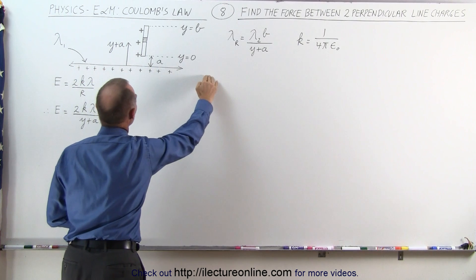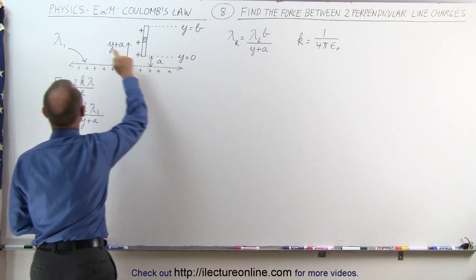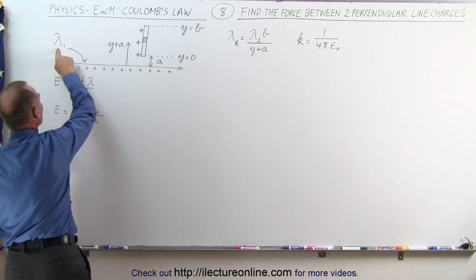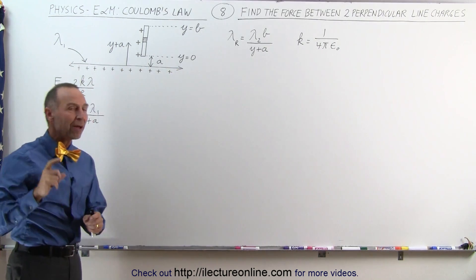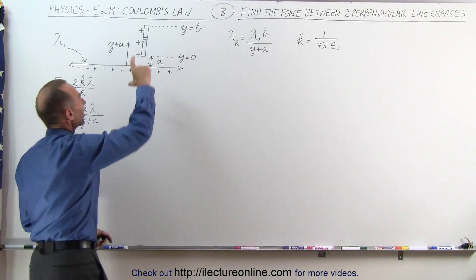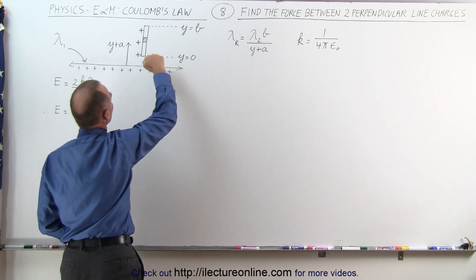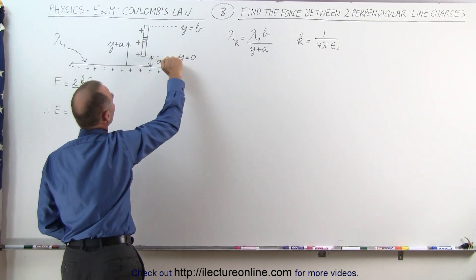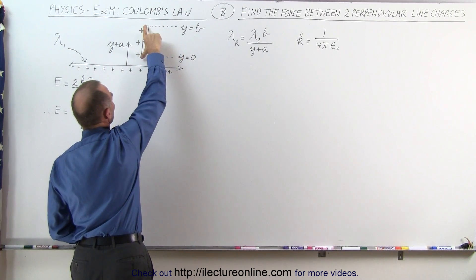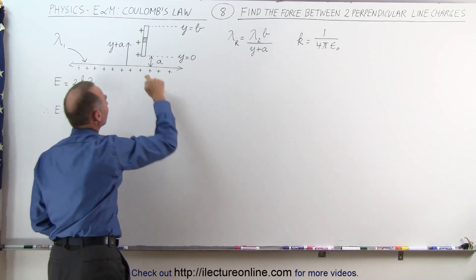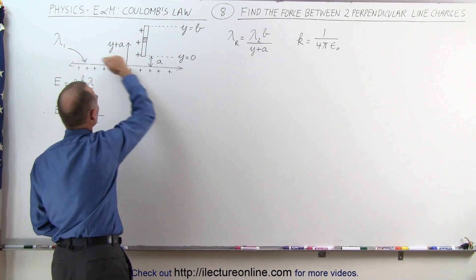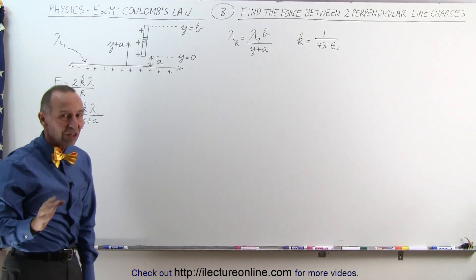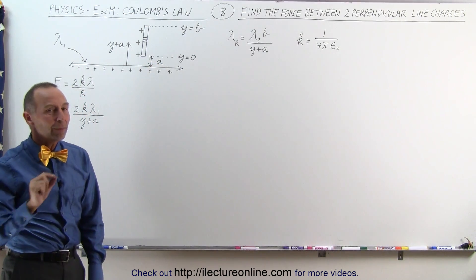We have an infinite line charge with a constant linear charge density λ₁ throughout. Then we have a short segment running in the vertical direction from y equals 0 to y equals b, so the length of the segment is b. The beginning of the segment is a distance a away from the line charge, and the charge density there is a little bit different.